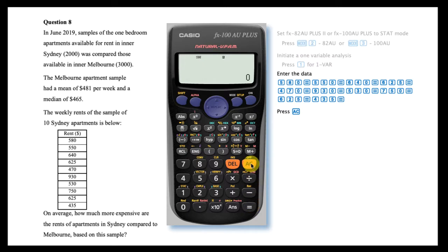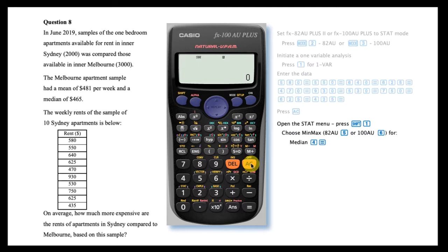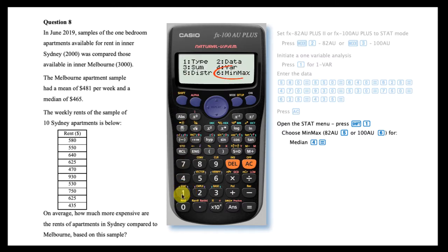To perform the required statistical calculations, open the statistics menu by pressing Shift and then 1. Choose the max/min option by pressing 6 on a FX 100 AU Plus, or by pressing 5 on an 82 AU Plus.